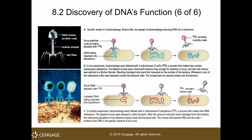They allowed the bacteriophages to infect bacterial cells and found that the radio-labeled sulfur was found outside the cell, but the radio-labeled phosphorus — which is the DNA — was found inside the cell. Therefore, the transforming principle must be DNA and not protein, because the viral protein did not enter the cell. It was the DNA that entered, as shown by the radio-labeled phosphorus inside the bacterial cell. This definitively confirmed that DNA is the transforming principle.